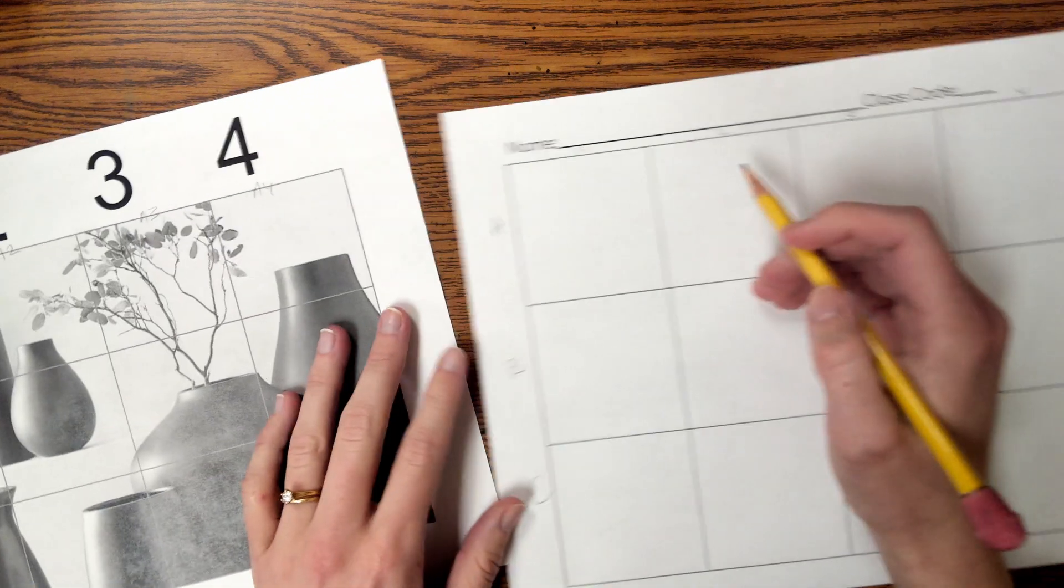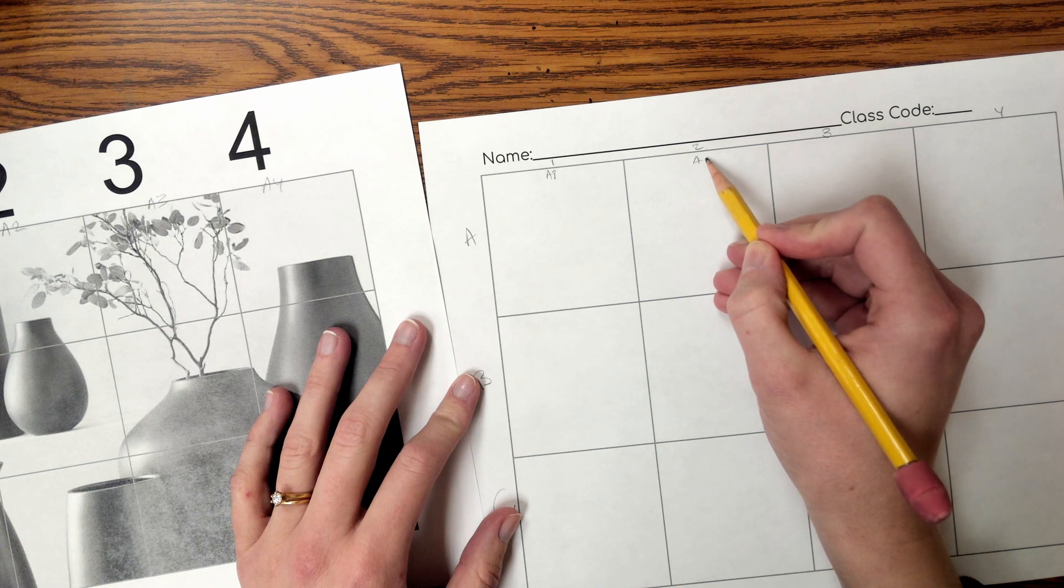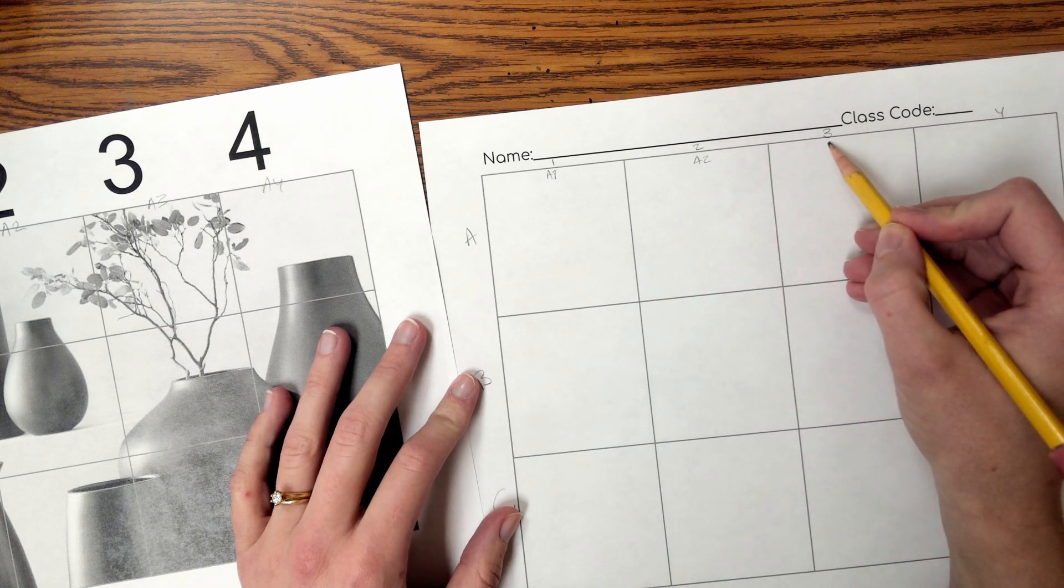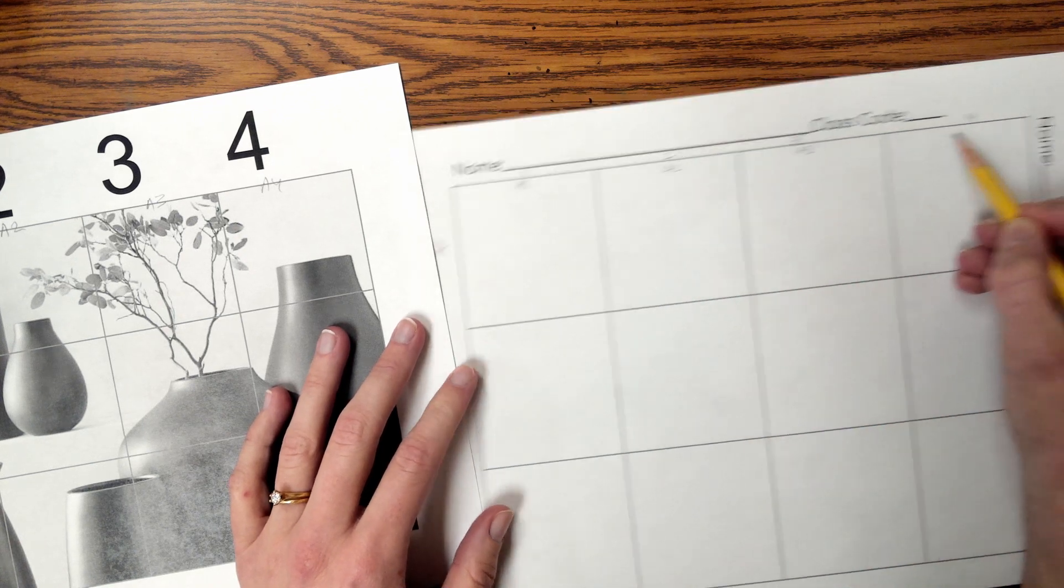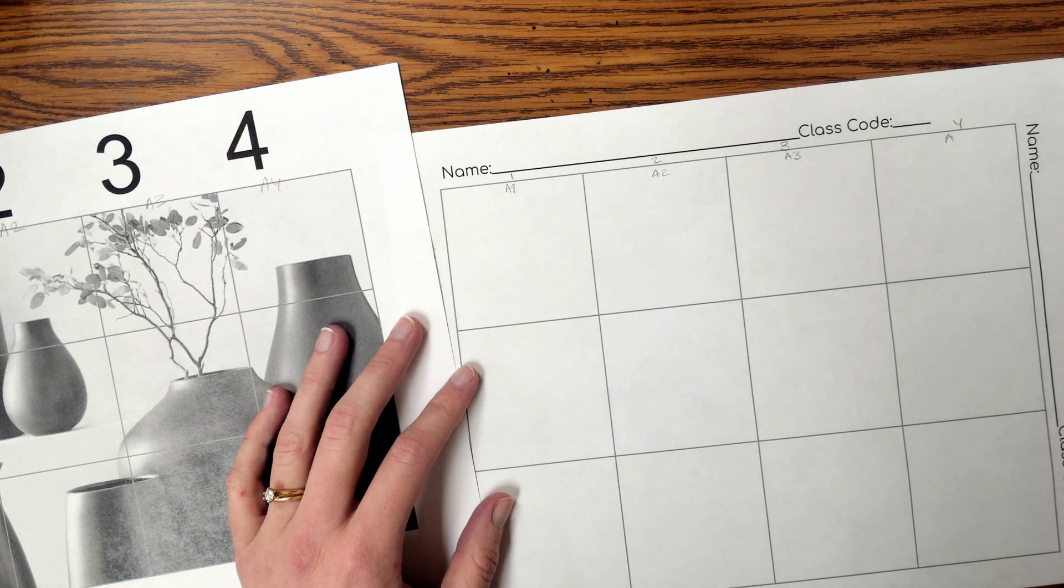And then it also doesn't hurt to label each square one at a time, because sometimes we're focused on, and in fact we will be focused on, only one square, and this can help us so that we aren't confused on which part of the drawing we're working on.